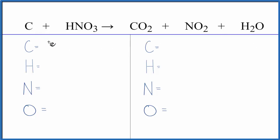Let's count everything up. We have one carbon, one hydrogen, one nitrogen, three oxygens. On the product side we have one carbon, two hydrogens, one nitrogen, and then oxygens, two plus two is four, plus one, five oxygen atoms.